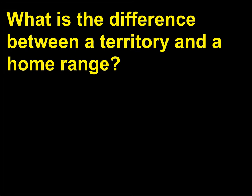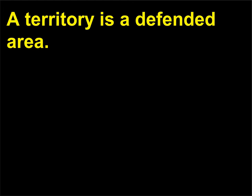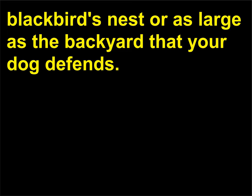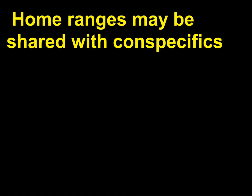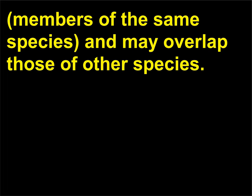What is the difference between a territory and a home range? A territory is a defended area. It can be as small as the space around a female red-winged blackbird's nest or as large as the backyard that your dog defends. A home range, in contrast, is simply the area where an animal spends its time. Home ranges may be shared with conspecifics—members of the same species—and may overlap those of other species.